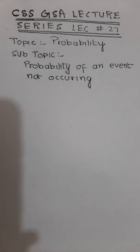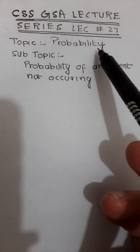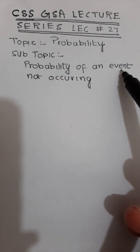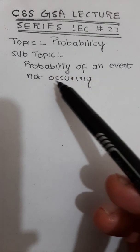Hello everyone, this is Umair Hassan and you are watching CSS GSC lecture series. This is lecture number 27 and the topic is probability while the subtopic is probability of an event not occurring.